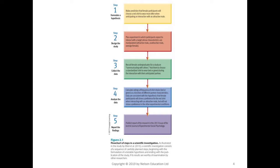Let's take a look at our textbook on page 34 in chapter 2. The authors have given us a really good example of how we formulate steps in scientific investigation. This particular research study by Elliot and Mayer in 2012 and 2014 looked at how colors affect behaviors.